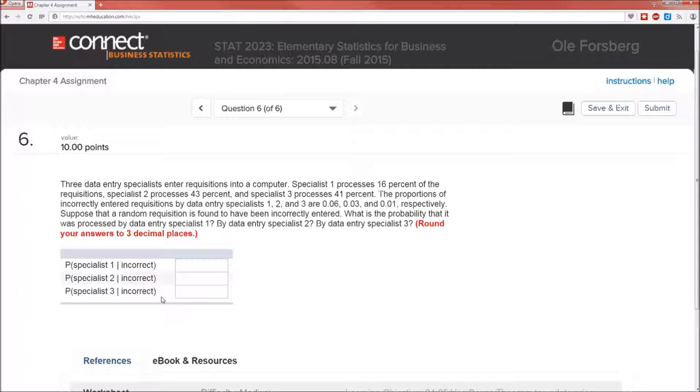So again let me emphasize this. The probabilities we're given, the 0.06, the 0.03, and the 0.01, are the probability incorrect given specialist 1, 2, and 3. We're asked to find the flip of that. We're asked to find the probability specialist 1 given it's incorrect.